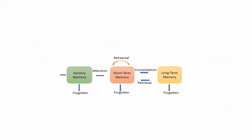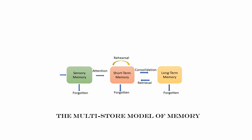This model of memory offers an alternative to the multi-store model of memory proposed by Atkinson and Shiffrin, which says that any information first goes to sensory memory, and if we pay attention to that information, then it goes to short-term memory, and through the process of consolidation, the information moves to long-term memory.